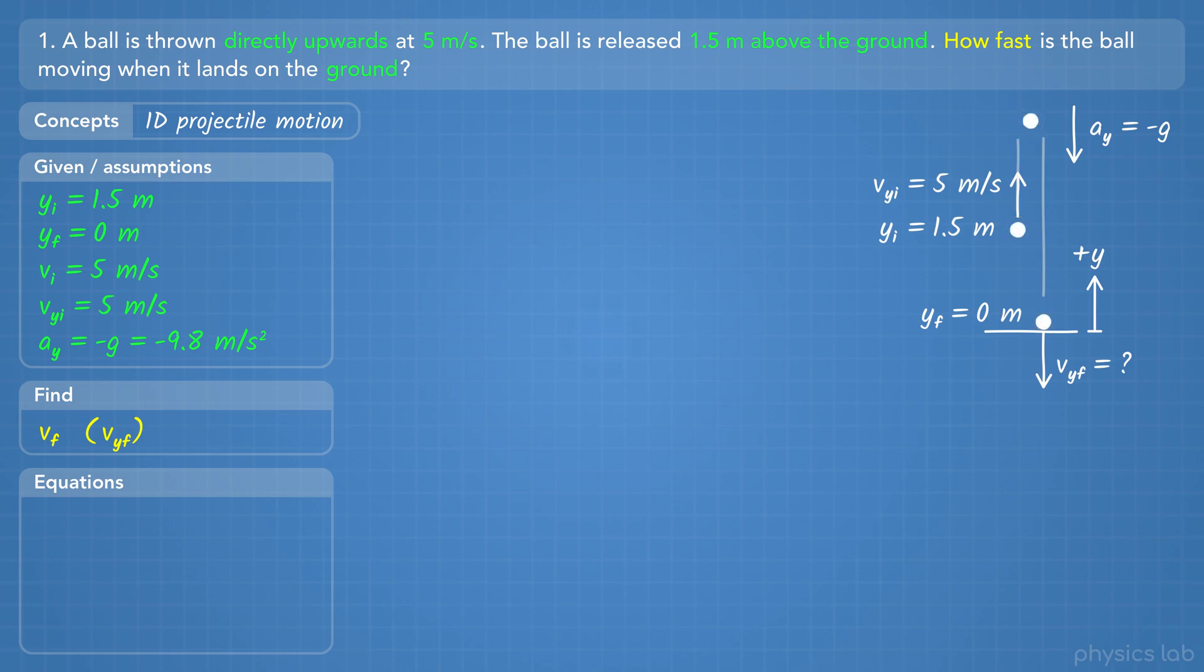So now we have a picture, and we know which values we're given, and what we're trying to find. You can include the values in the picture, or just write them somewhere else, like we did on the left. So next, what equations can we use to find the final speed of the ball?